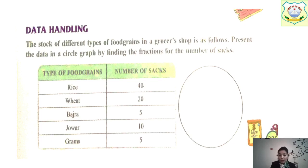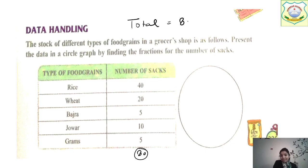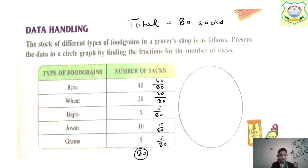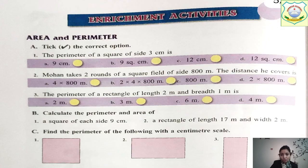The given values are: rice = 40, wheat = 20, jowar = 5, bajra = 10, gram = 5. First add all values: 40 + 20 + 5 + 10 + 5 = 80. Total is 80 sacks. Now we calculate fractions: 40/80, 20/80, 5/80, 10/80, and 5/80.